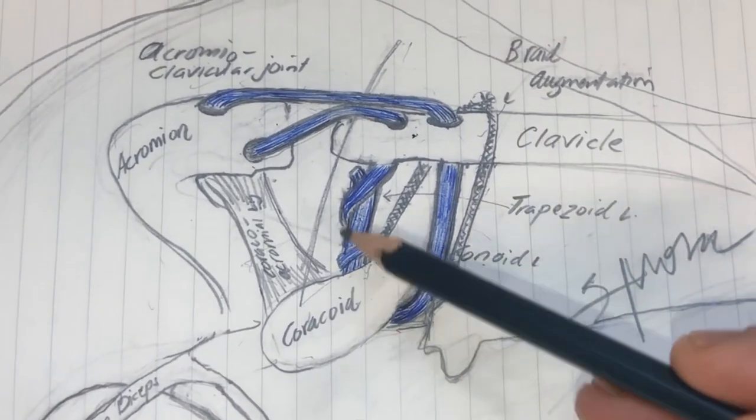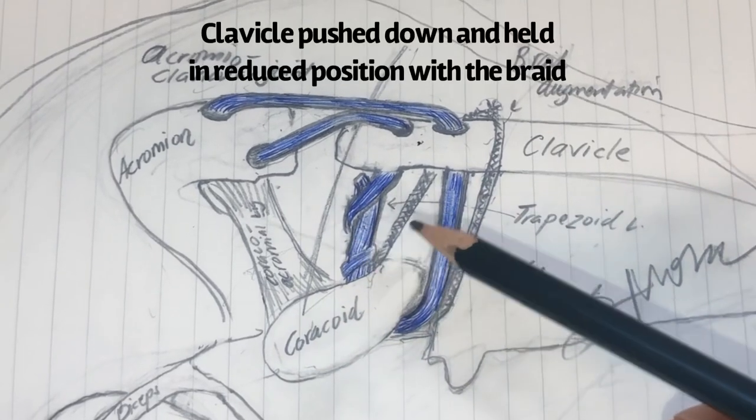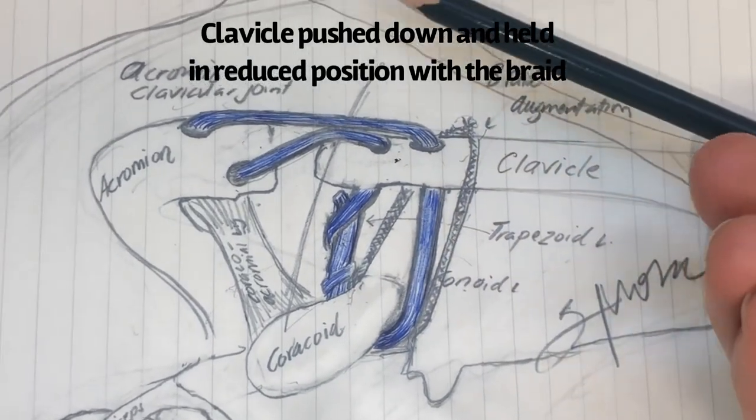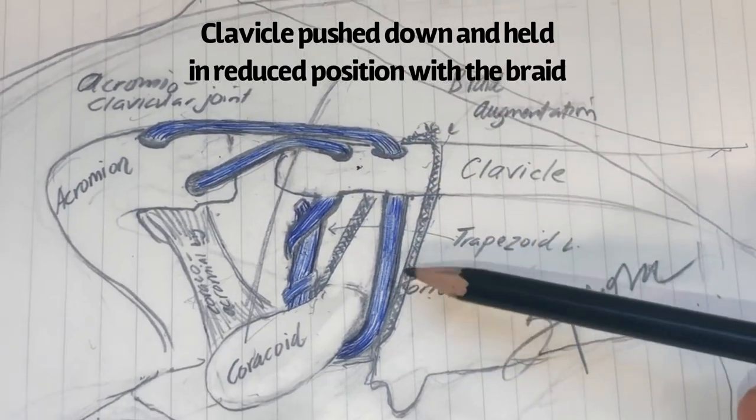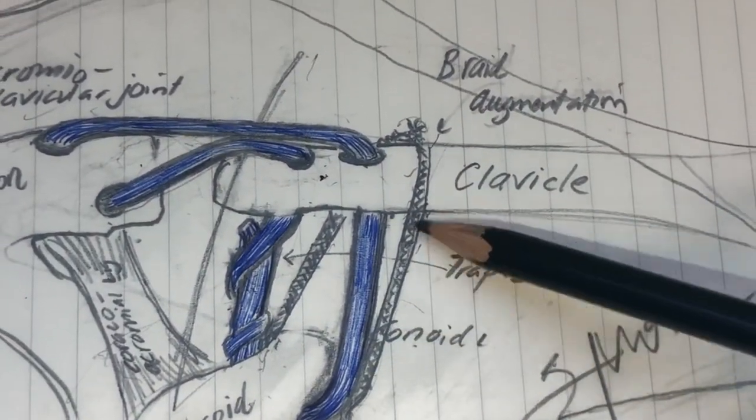Once I loop both structures through, our passable structures, then I reduce the clavicle, bring it down, line it up with the acromion, and I secure it with this braid.